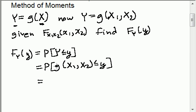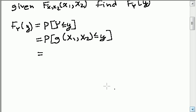The next step is going to be the toughest step. It's where I'm trying to determine what area of X1 and X2 causes g to be less than or equal to little y. This is called finding the preimage. So that's going to be dependent on the particular function that we're studying.